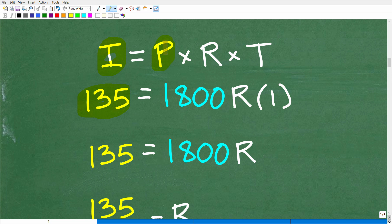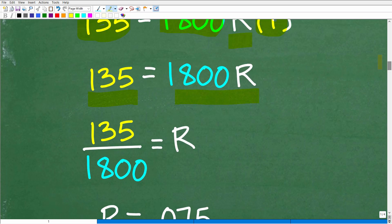R is what we're looking for. So that's our variable R. We're going to solve for this and our time is one year. So that'd be one. So we got 1800 times R times one. So that's just going to be 1800 R. So we have this simple algebraic equation, 135 is equal to 1800 R. So how do we solve for R? Simple. We just divide both sides of the equation by 1800. So R will be equal to 135 divided by 1800.